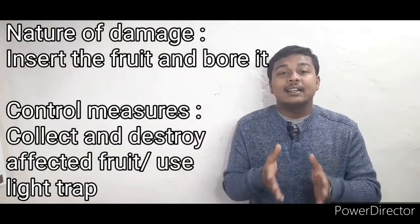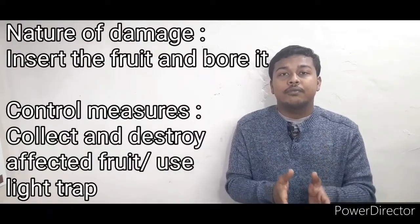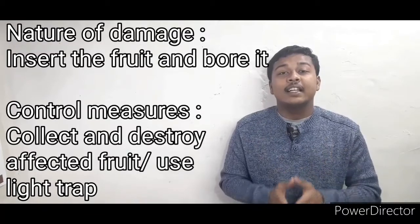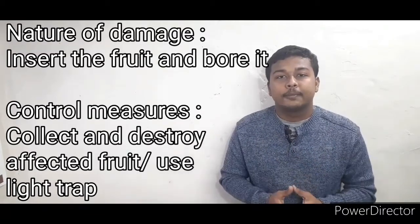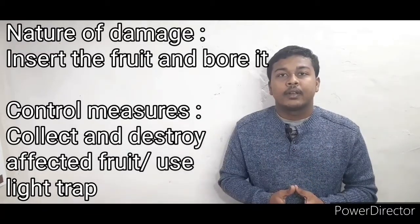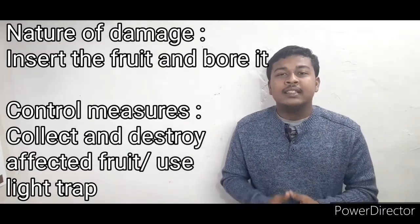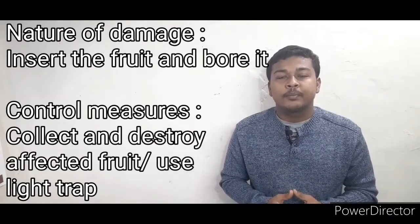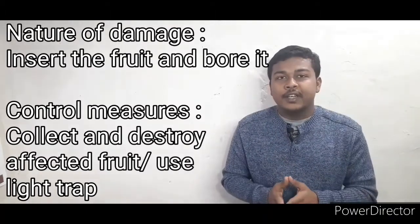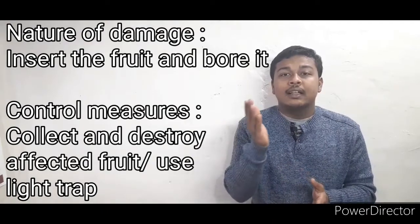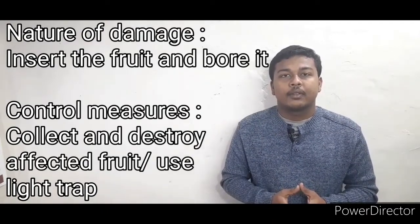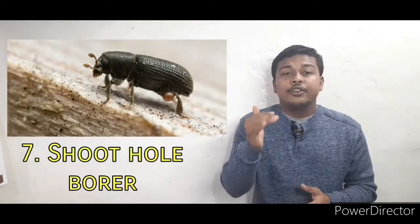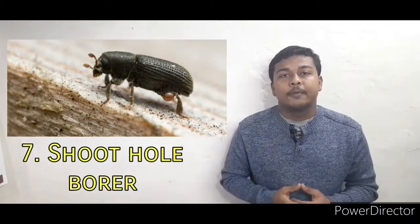The next pest is the fruit borer. The affected crop is pomegranate. They insert into the fruits and bore through them. To control this, collect and destroy the affected fruits, and we can also use light traps.